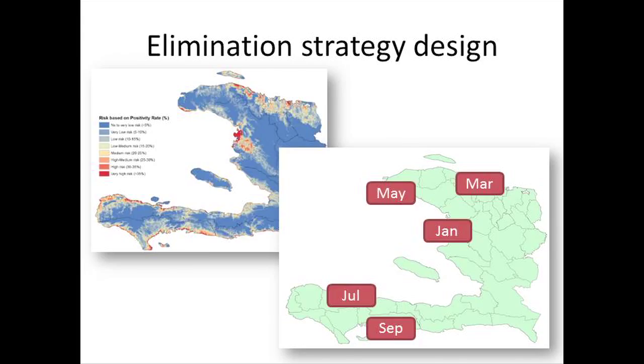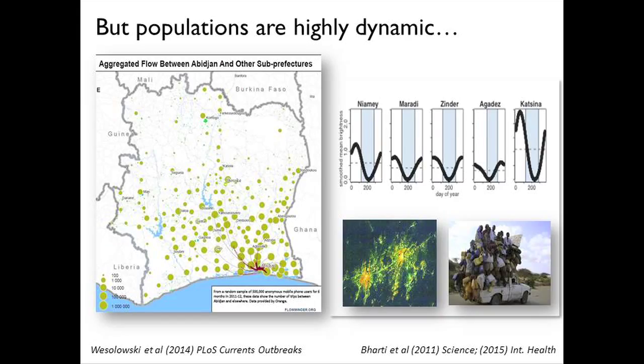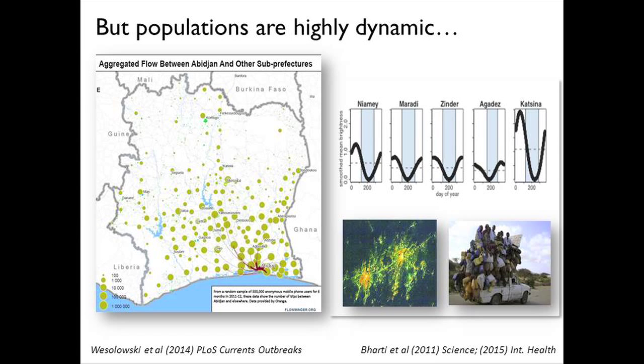The problem is populations don't just stay put — they are highly dynamic. This is data from mobile phone records: just a sample of 500,000 anonymous users showing movement patterns out of Abidjan over six months, with up to a million trips made to other parts of the country. Equally, we can see from satellite night lights that there are such huge seasonal migrations in Niger and northern Nigeria that we can actually see cities getting brighter as migrants move in.